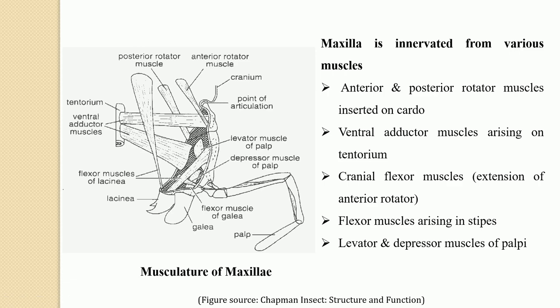The maxilla functions as a second pair of jaws, actively involved in cutting and grinding food material. The maxillary palp also bears gustatory receptors for tasting food. Since insects do not have limbs to push food into the oral cavity, the lacinia, galea, and maxillary palp support the food material and hold it in place across the mandibles while the mandibles perform the cutting action.